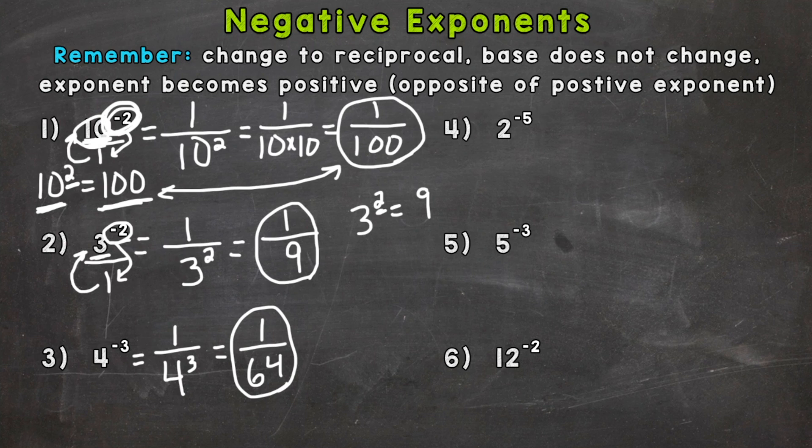Number 4: 2 to the power of negative 5. Reciprocal, same base, positive exponent. 2 to the 5th power: 2 times 2 is 4, times 2 is 8, times 2 is 16, times 2 is 32. So we get 1/32.